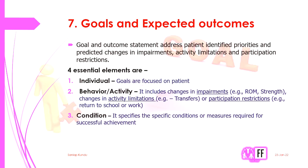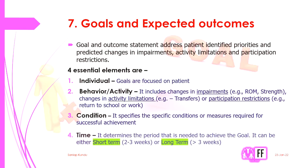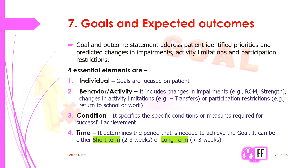The second element is the condition, which specifies the specific conditions or measures required for successful achievement. The third is time, which determines the period needed to achieve the goal. On the basis of time, goals can be divided into short-term goals — two to three weeks — and long-term goals, which take greater than three weeks. In short-term goals a therapist can achieve a minimal amount of change, while in long-term goals the change is more drastic.